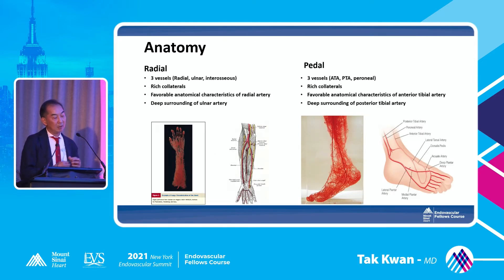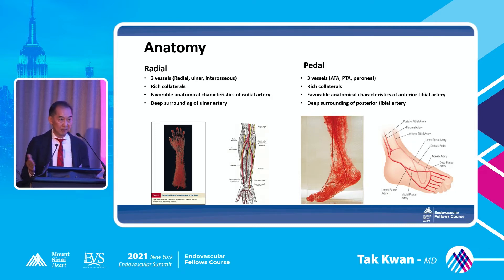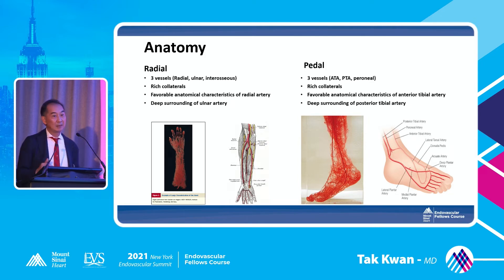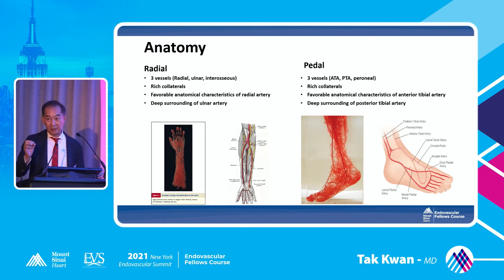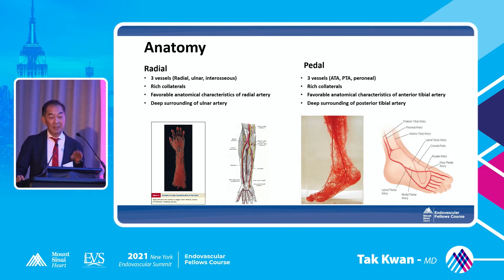How about anatomy? For radial, we are a free vessel — everybody thinks of the radial, but the interosseous is also important. They have very rich collaterals. If you lose the radial, usually nothing happens. If you lose both radial and ulnar, it has happened before, but still nothing happens because of the interosseous. The radial artery is very easy to compress — there's bone underneath, which makes bleeding complications almost zero. For pedal, similar: anterior tibial, posterior tibial, peroneal. The AT is similar to radial, and the PT is very similar to ulnar.